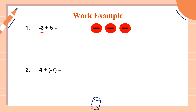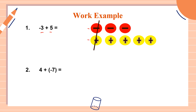Plus positive five — we need five yellow chips: one, two, three, four, five. Next step: remove the zero pairs. We do have zero pairs. The first pair — cancel it out. The second — cancel it out. The third — cancel it out. Then count the remaining chips: one and two. These are positive chips, so our answer is positive two. Therefore, negative three plus five equals positive two. For number one, we have three zero pairs.